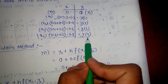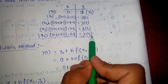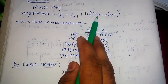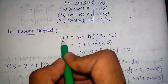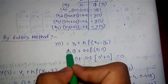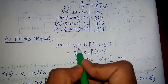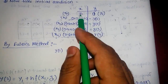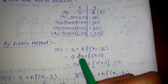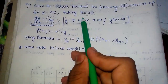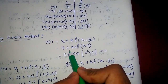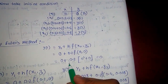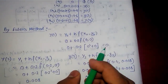As the formula says, y_n equals to y_(n-1) plus h times f(x_(n-1), y_(n-1)). First we calculate y₁, since y₀ is given. y₁ equals y₀ plus h times f(x₀, y₀). The value of y₀ is 0, h is 0.2, and f(0, 0) — since x₀ is 0 and y₀ is 0 — equals 0. So y₁ equals 0.